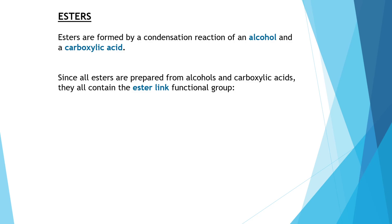Esters are another homologous series. They are formed when we react an alcohol and a carboxylic acid together via a condensation reaction. All esters contain an ester link, which is a C double bond O, O group found within the structure, as we can see on the diagram.